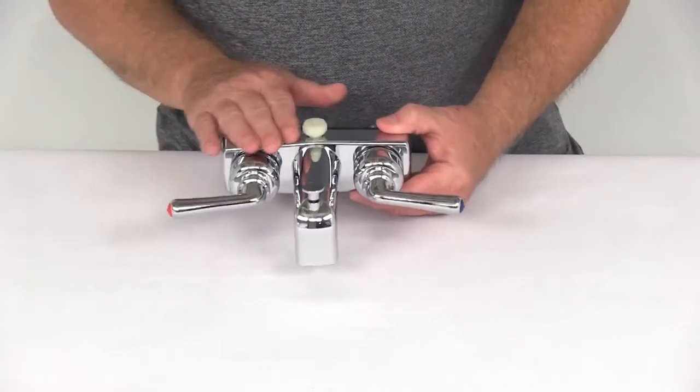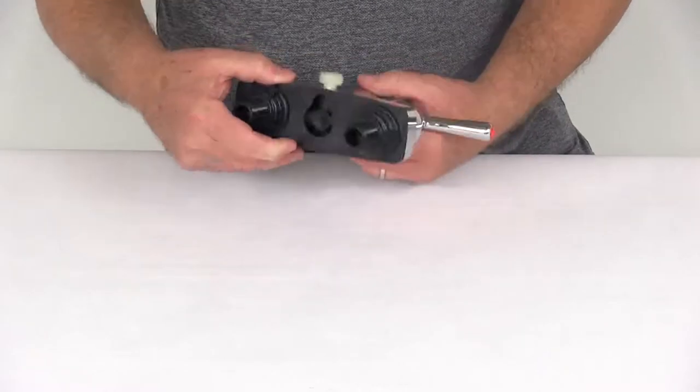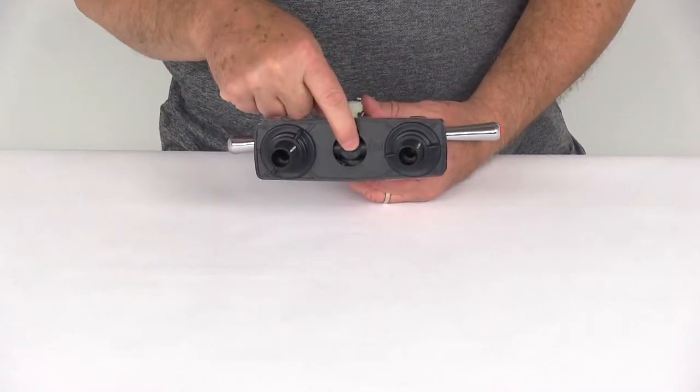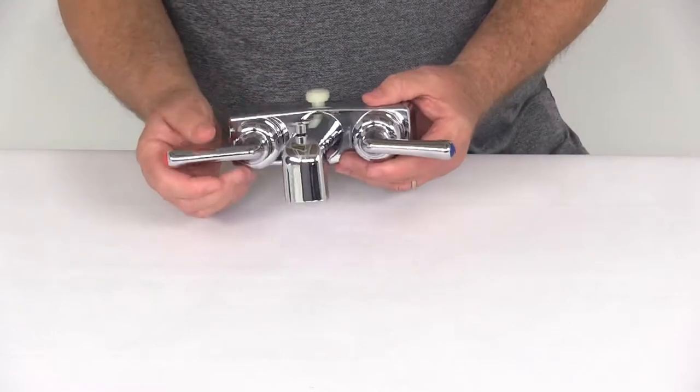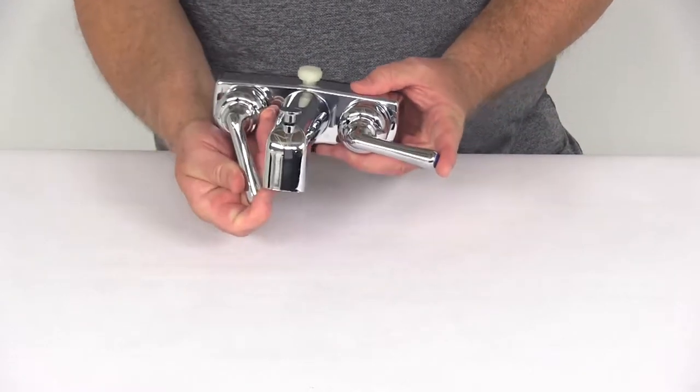This faucet is a chrome plastic construction. On the inside it uses a DuroPro underbody, uses a plastic compression valve, and it uses the dual teacup handles for hot and cold water.